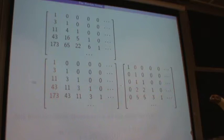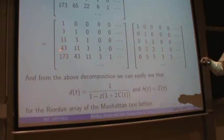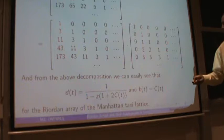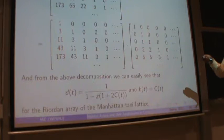This is its decomposition into the Appell and Lagrangian subgroups. In this decomposition it is very easy to get H of T, which turns out to be C of T — the Catalan generating function — and it's not difficult to look at the diagonal of the Manhattan taxicab paths to obtain D of T. Once you write the decomposition, it becomes easy to recover the two formal power series that define your Riordan array.